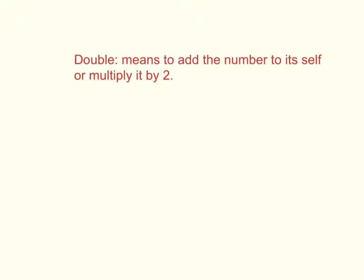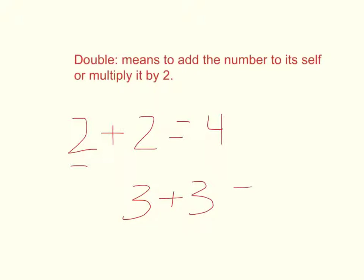So what does double mean? Double means to add the number to itself, or you could multiply it by two. We talk about knowing your doubles in math. For instance, you know 2 plus 2 equals 4, so 2 doubled would be 4. Or 3 plus 3 is 6, so 3 doubled would be 6. When you hear the term to double, all you need to do is add that number to itself. If you are told to double the number 5, just do 5 plus 5 and the double would be 10.